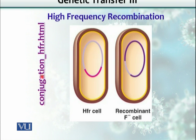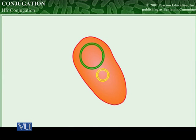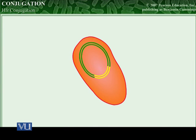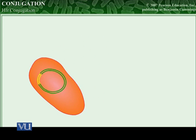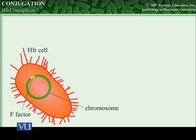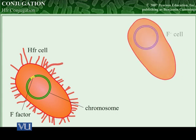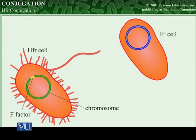Let's watch a video to make this more clear. Occasionally, an F-factor integrates into the E. coli chromosome, converting the F-plus cell to an HFR, or high-frequency recombination cell. Like F-plus cells, HFR cells form conjugation pili which attach to F-minus cells.